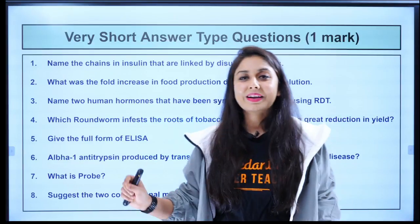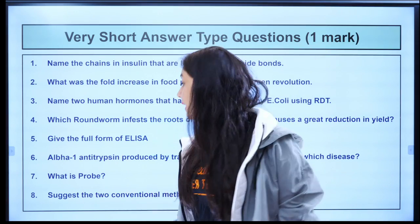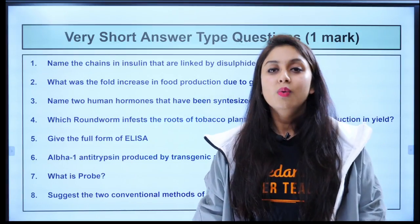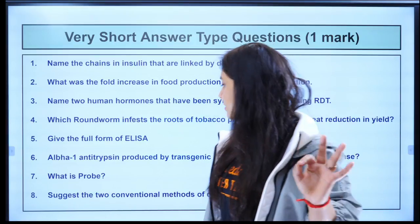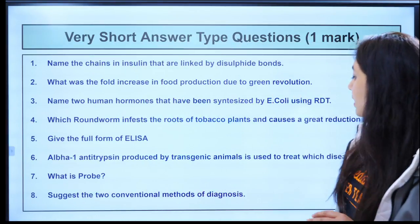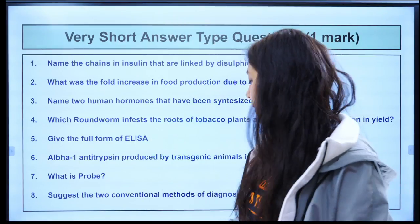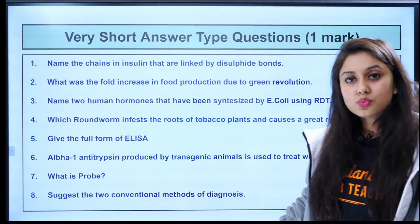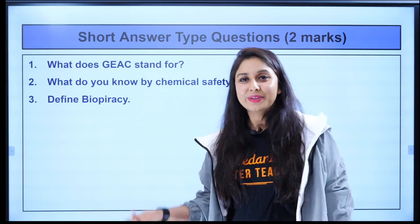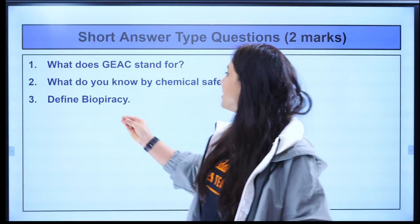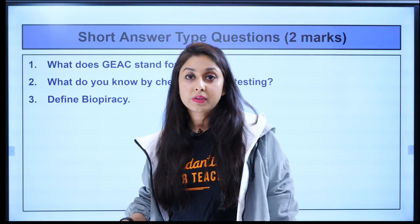I'll give you a hint: it was made in a sheep — you remember Dolly? That sheep was Tracy, and through that it was made. Next question: what is a probe? It comes in the last part of the chapter, it's very easy, just look it up if you don't know — it's one mark, just write one or two lines. Next: suggest two conventional methods of diagnosis. Then moving to two mark questions — what does GMO stand for? This is very important for NEET, asked at least three or four times from 2011 to 2020.